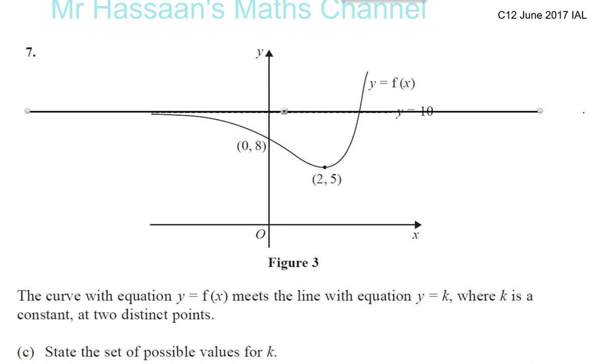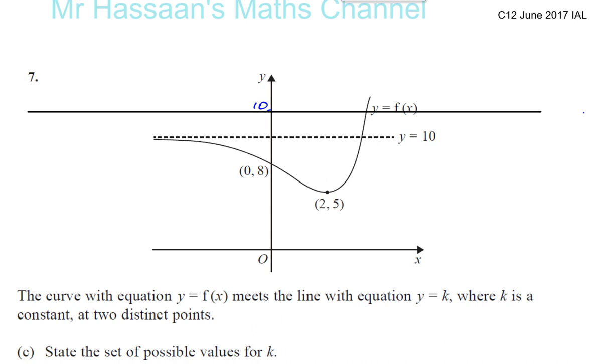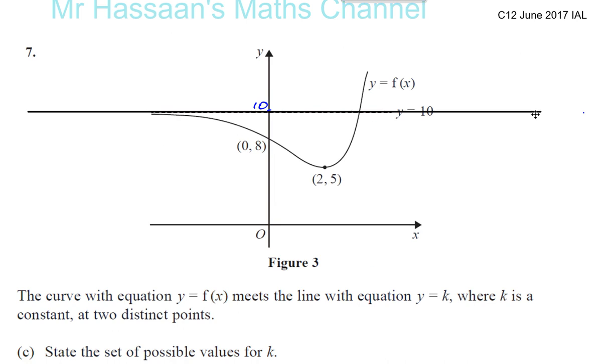So that's what this question means. So you can see, this is the point 10 on the Y axis, and this is the point 5 on the Y axis. So we can see, as long as the line Y equals K is somewhere between 5 and 10, then there would be two distinct solutions.